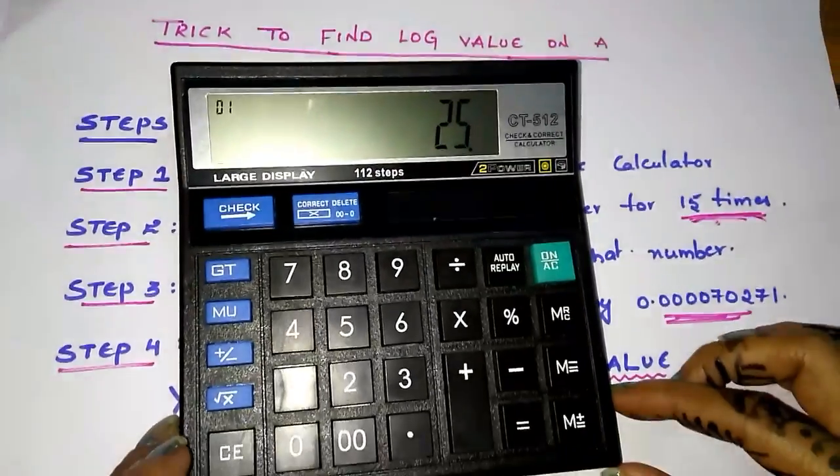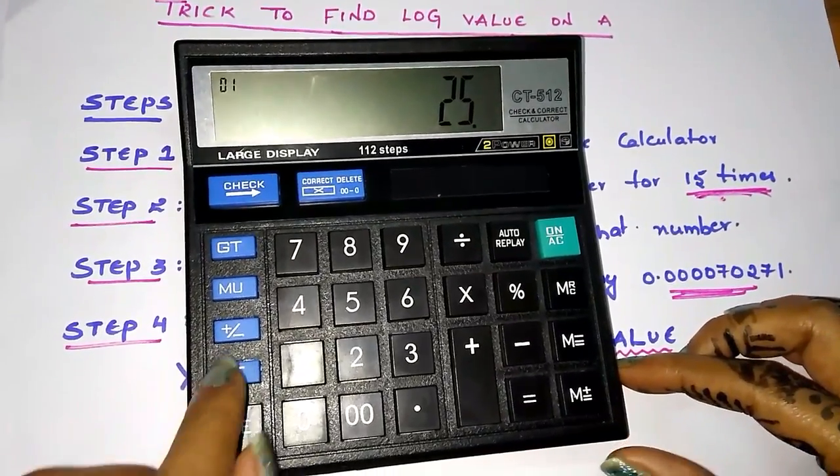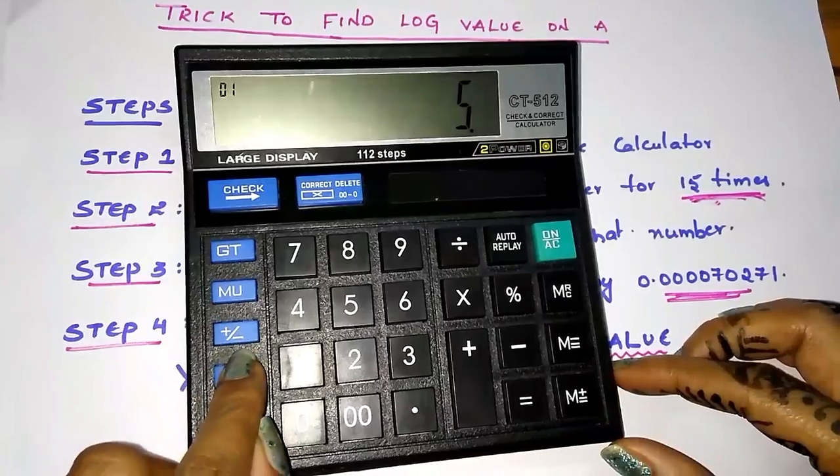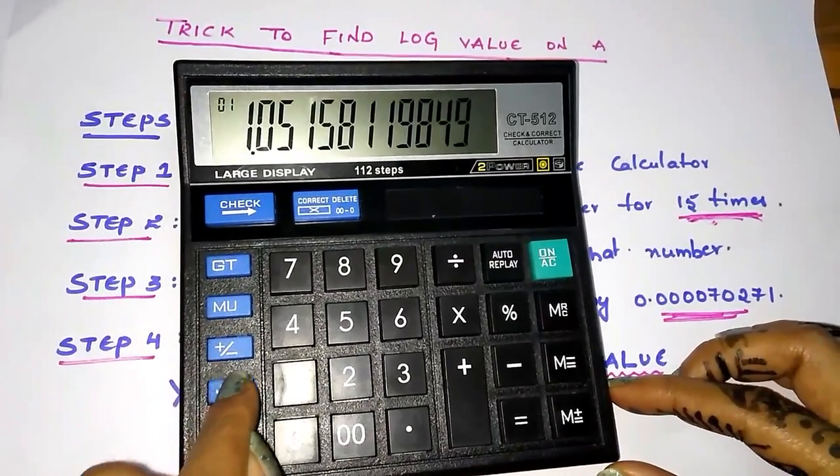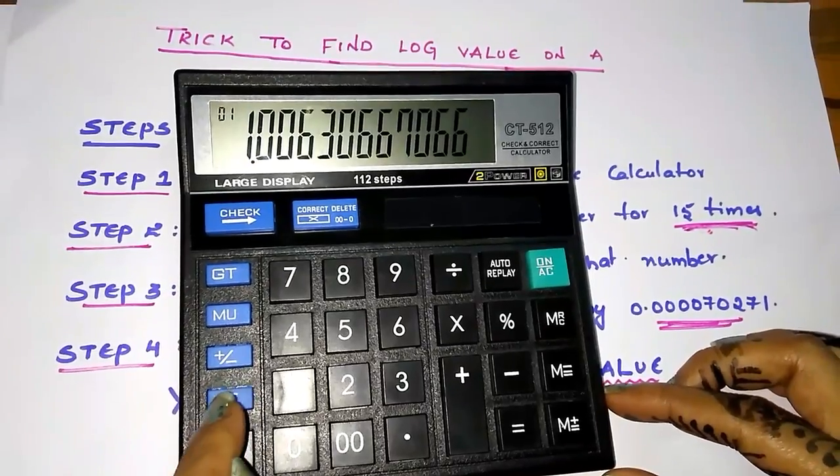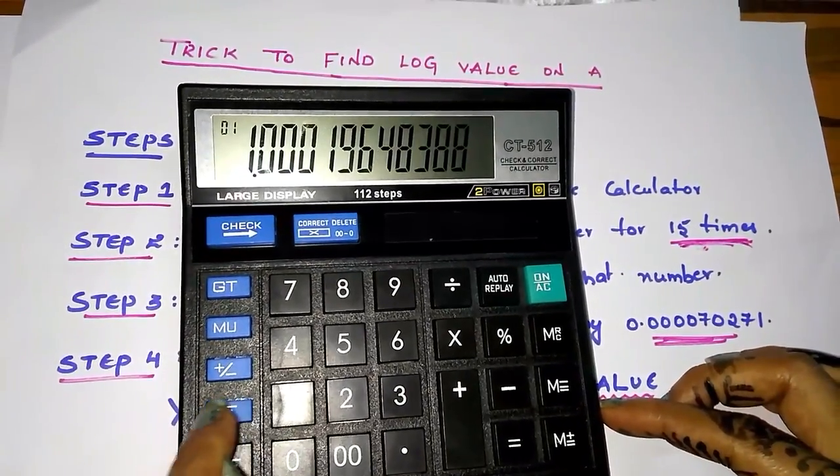Now do square root for 15 times. This is the square root button, press it for 15 times. One, two, three, four, five, six, seven, eight, nine, ten, eleven, twelve, thirteen, fourteen, fifteen.